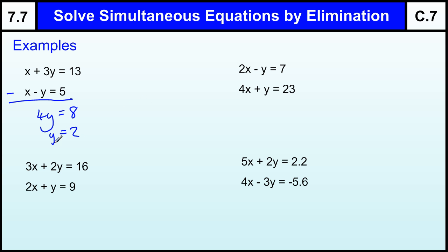Now with the simultaneous equation, we have to solve both equations at the same time, so we need the value for X as well. So if I pick the easier of the two equations, X minus Y equals 5, and replace the Y with 2, I have X minus 2 equals 5. So X must be 5 plus 2, which is 7. So, a fairly straightforward one.